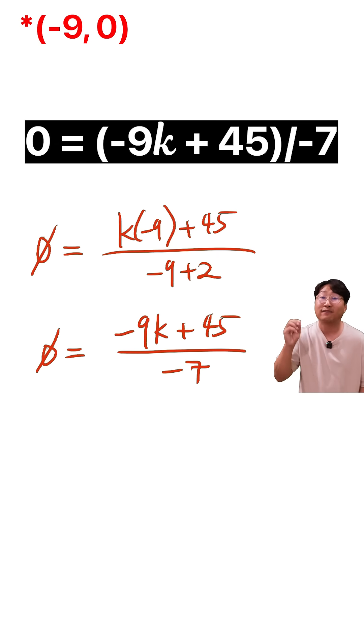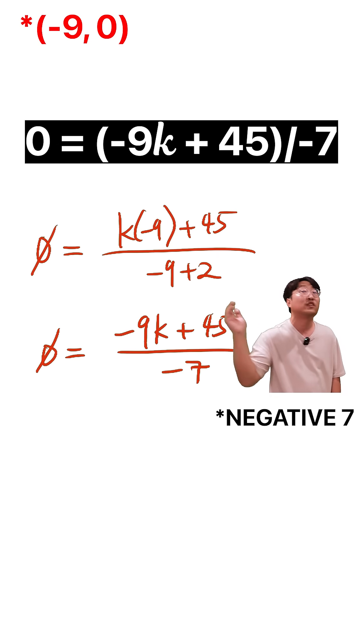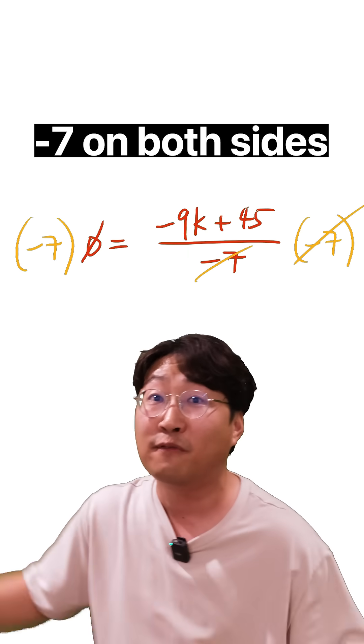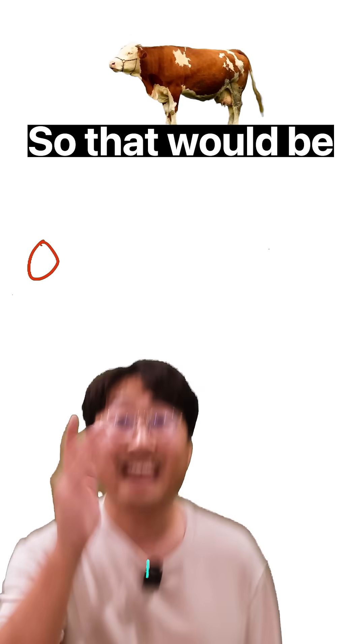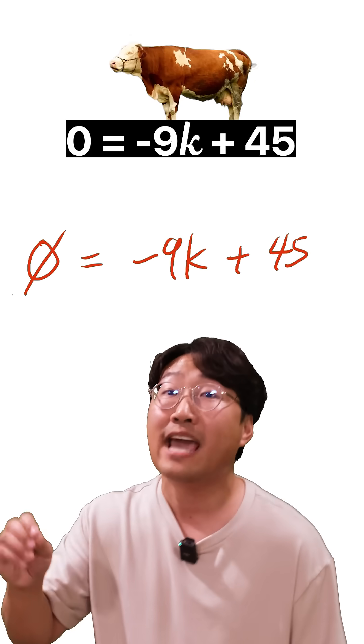That'll be 0 is equal to negative 9k plus 45, all over 7. Go ahead and multiply by negative 7 on both sides, because that's still going to be 0 on the left side anyway. So that'll be 0 is equal to negative 9k plus 45.